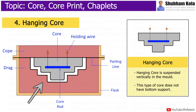The hanging core is suspended vertically in the mold. This is achieved either by hanging wires, or the collar core rests in a collar cavity created in the upper part of the mold. This type of core does not have bottom support.